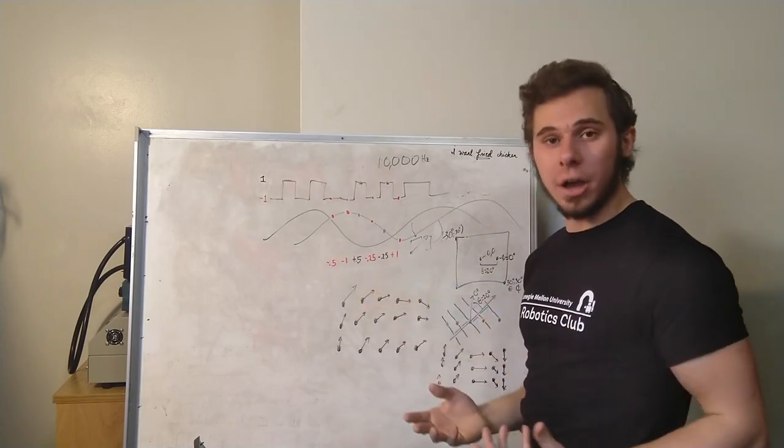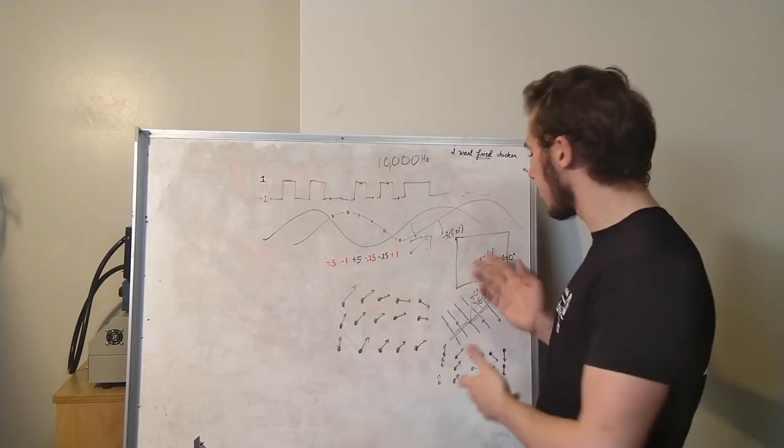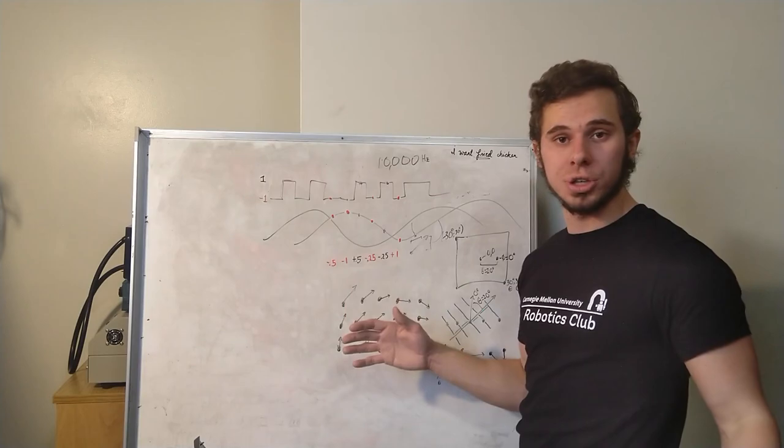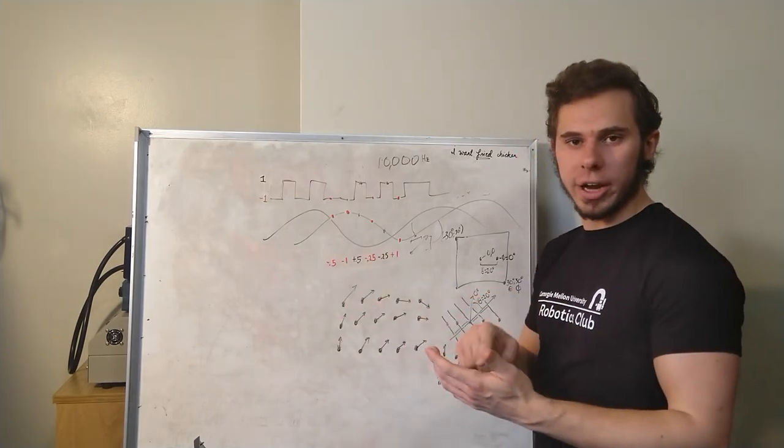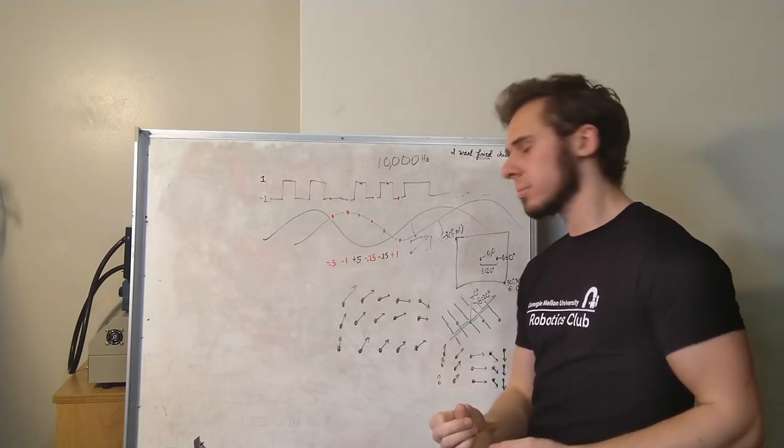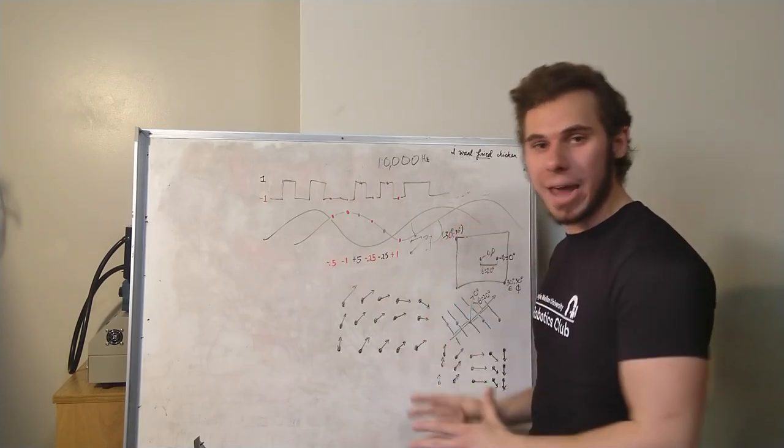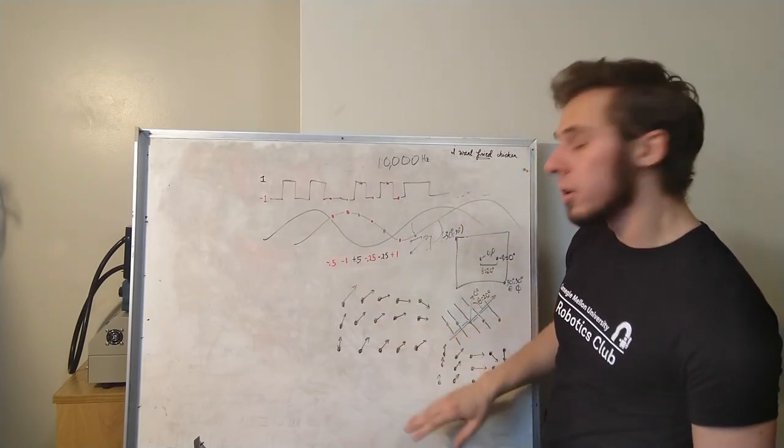So once we do that, we just add up all the microphones together, and if there's a strong signal in that direction, we'll get a very large complex number. If they don't line up, then they'll move around in different directions, and they'll cancel out, and we'll get a small number. So we simply take the magnitude of the sum of the product of our microphone data times the lookup table for that position in the image.